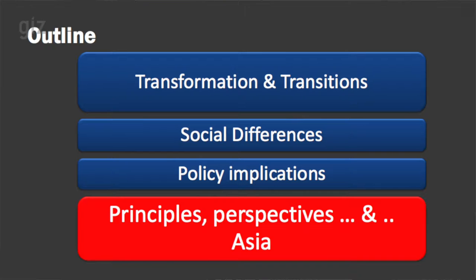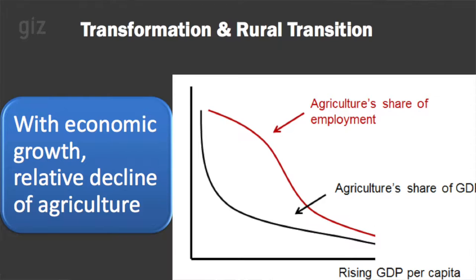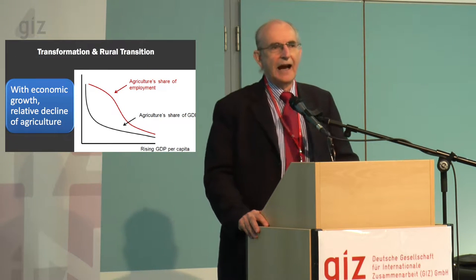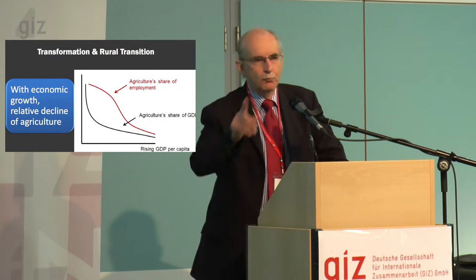I'll put amongst this presentation a set of perspectives and reflections which I hope you will find stimulating. Our basic model under transformations and transitions is an economic transformation which takes economies — with economic growth — from economies which are primarily agrarian to economies in which manufacturing and services, and in particular higher value services, take up the majority of GDP. As this takes place, agriculture declines, but declines relatively.